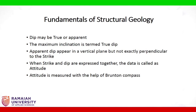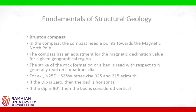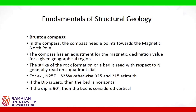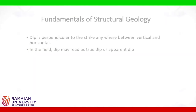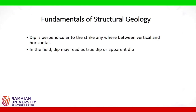Attitude is measured with the help of a Brunton compass. In the compass, the needle points towards the magnetic north pole. The compass has an adjustment for the magnetic declination value for a given geological region. The strike of the rock formation or bed is read with respect to north on a quadrant dial — for example, north 25 degrees east or south 25 degrees west, otherwise 025 and 215 azimuth. If the dip is 0, the bed is horizontal; if the dip is 90 degrees, the bed is considered vertical. Dip is perpendicular to the strike, anywhere between vertical and horizontal.